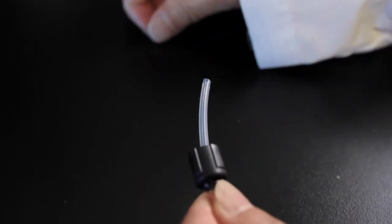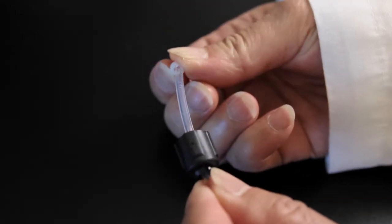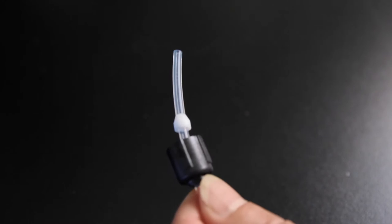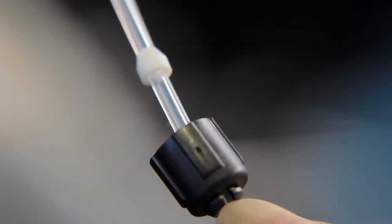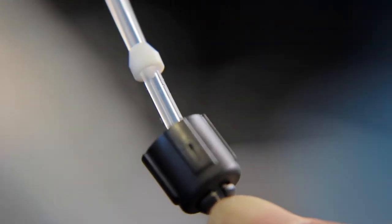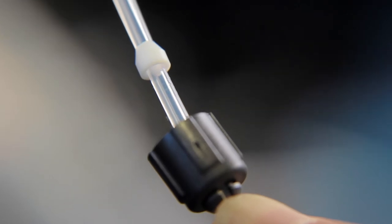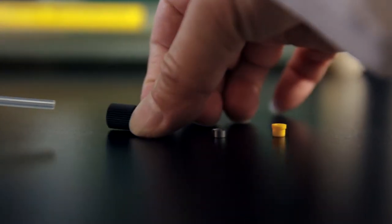To make the collet nut connection, slide the nut fitting and ferrule over the tubing, making sure the tapered end of the ferrule faces the end of the tubing and the blunt end of the ferrule faces the nut.